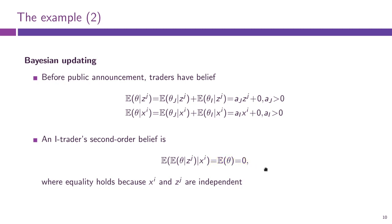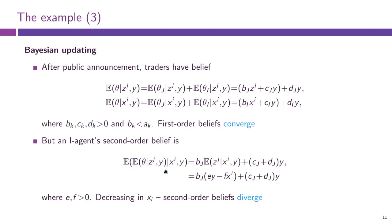Similarly, trader J will also have no idea how trader I valued the asset. Importantly, trader I's opinion about trader J's valuation does not depend on X_I — it does not depend on the signal that trader I receives. So the second order belief is independent of the trader's private signal. Now let us suppose that there is a public signal.